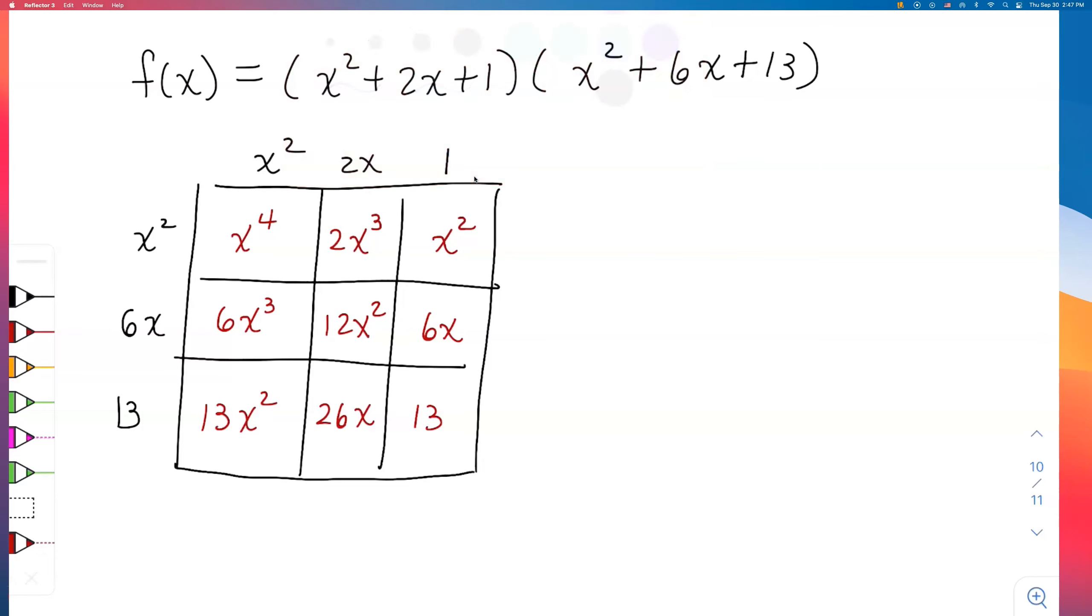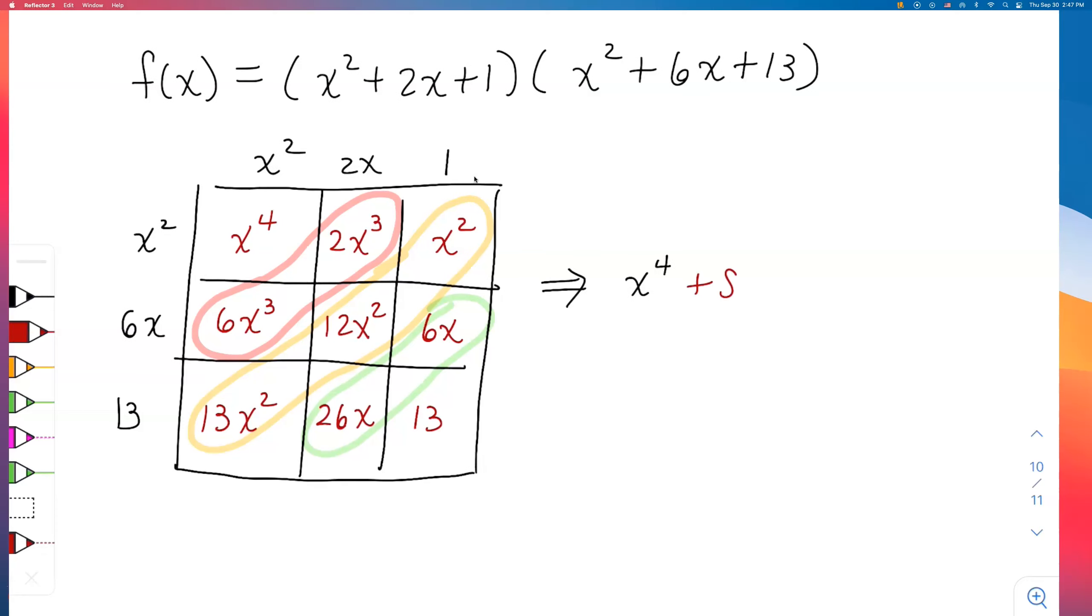And if things worked out okay, we're going to see some like terms. Look, I have 6x³ and 2x³—those are like terms. And if you notice these three terms in diagonal, they're all x², so they will add up too. And the last row, do you see a diagonal? I can do 26 + 6 there too. So if I write out my final answer, yay, I will get x to the fourth. If I add up the cubic terms, I will get 8x³. If I add up the quadratic terms, 13 + 12 + 1, what's that going to be? 26x². Add up these linear terms. If I add 26 + 6, I will get 32.